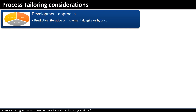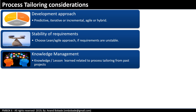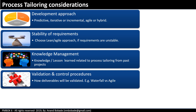Process tailoring considerations: key areas that lead to tailoring include development approach — the project manager defines whether it is predictive, iterative, incremental, agile or hybrid. Stability of requirements also drives the approach; the project manager will choose a lean or agile approach if requirements are unstable. Knowledge management: if a project is a repeat of a similar past project, knowledge and requirement management will help with related systems and their possible reuse. Validation and control procedures will differ based on the selected approach — for example, the business acceptance process is tailored based on whether a waterfall or agile approach is chosen.